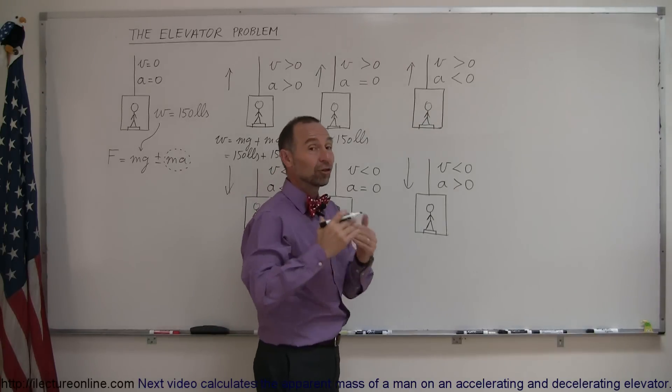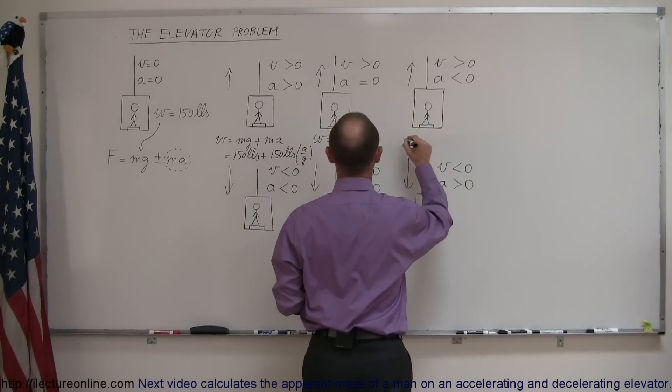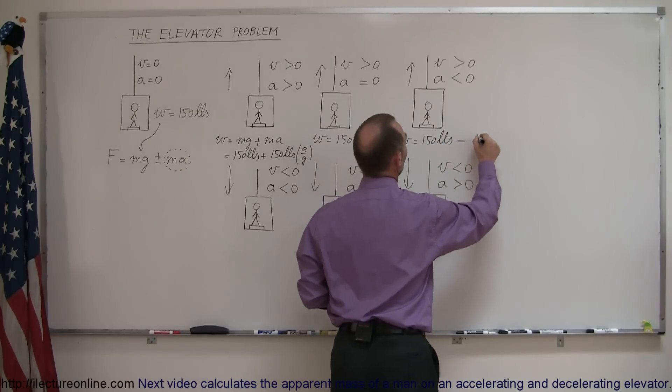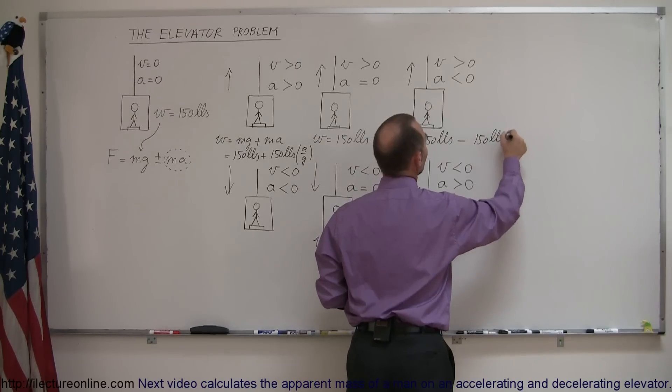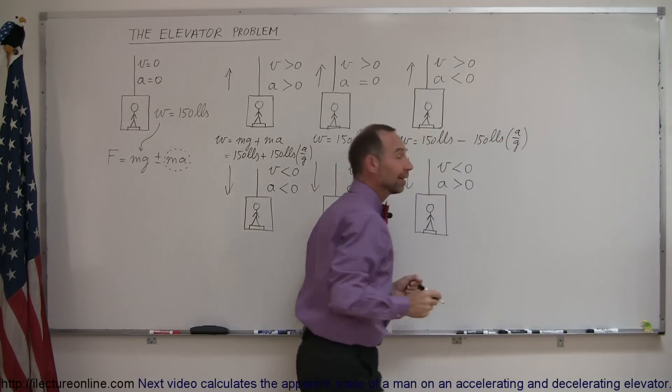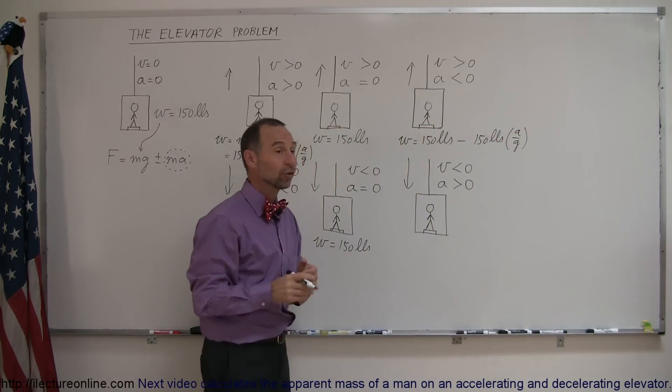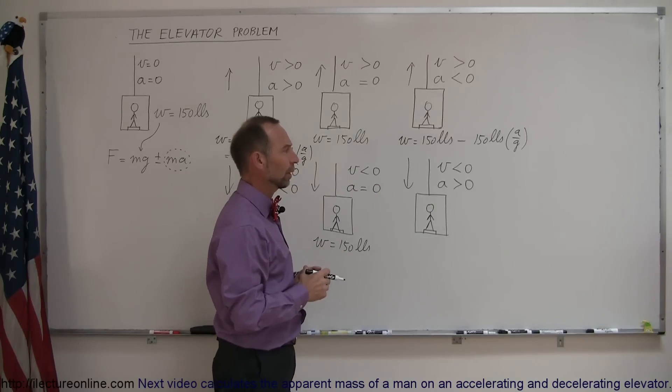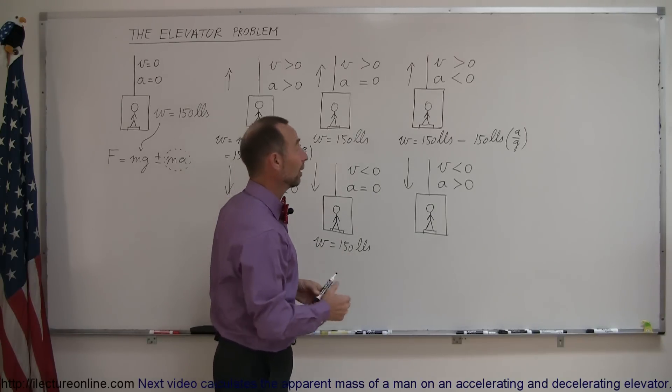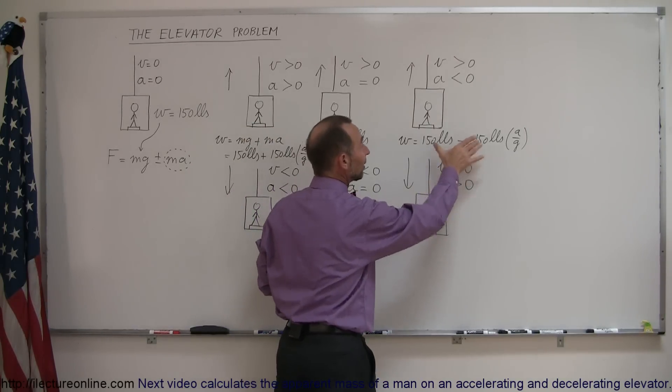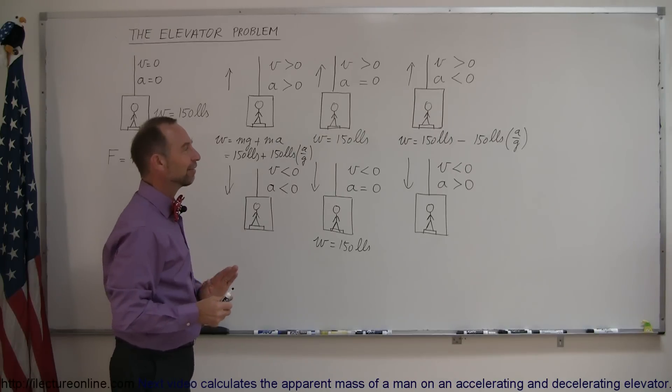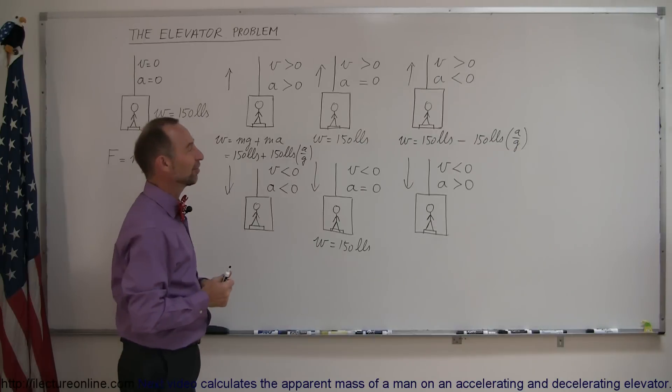Conversely, over here, when the elevator is slowing down, then the weight here would be equal to 150 pounds minus 150 pounds times the ratio of a over g. Again, let's say that the elevator can slow down so quickly that a is equal to g, which is minus 9.8 meters per second squared or minus 32 feet per second squared, then the person would temporarily be weightless as the elevator slows down. So usually elevators don't slow down that fast because it would be quite a sensation to feel weightless at that moment. But that's how you would do that.